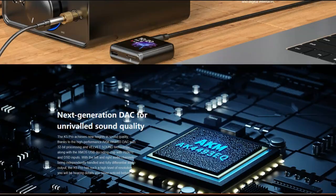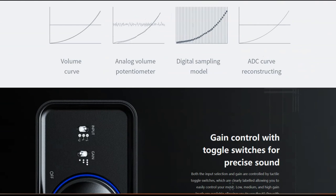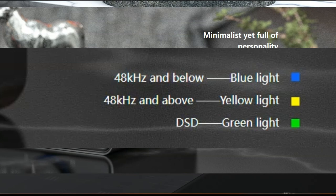How can you be sure you're actually playing DSD? Well, your DAC should tell you that. Check, for example, the FiiO K5 Pro. The LED light is color-coded so you know what file type it is receiving. According to FiiO, when playing DSD files the light should be green. And green it is.